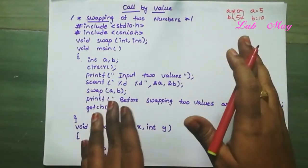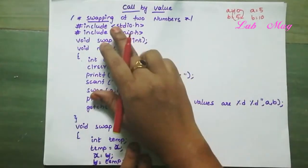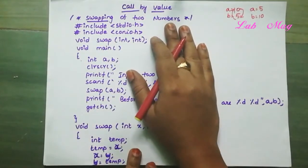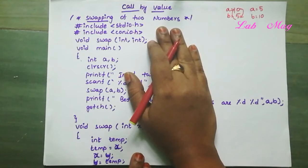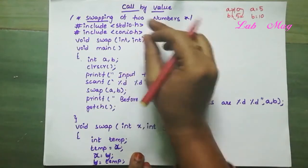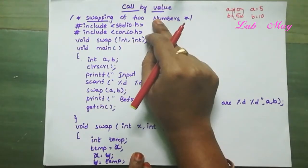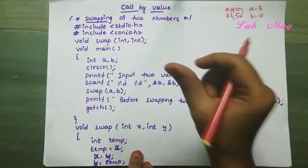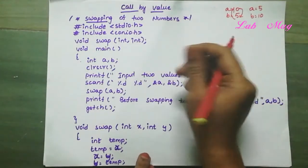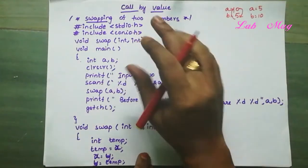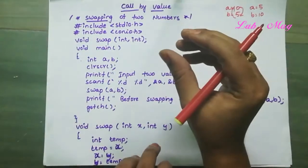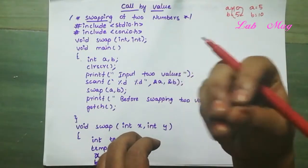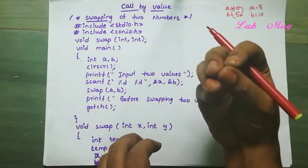Interchanging of two values means swapping. Swapping of two numbers uses the functions concept. Call by value means we pass values to a function call — we pass the value to a function.